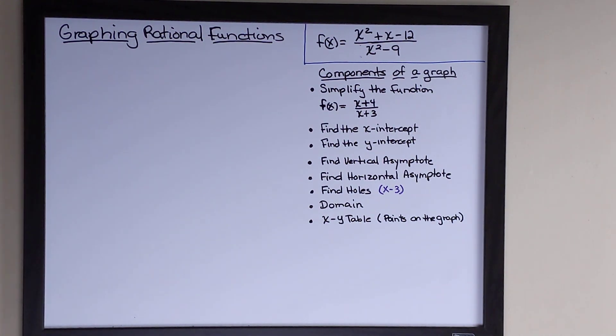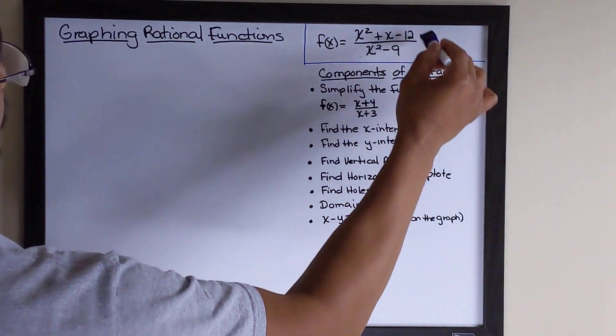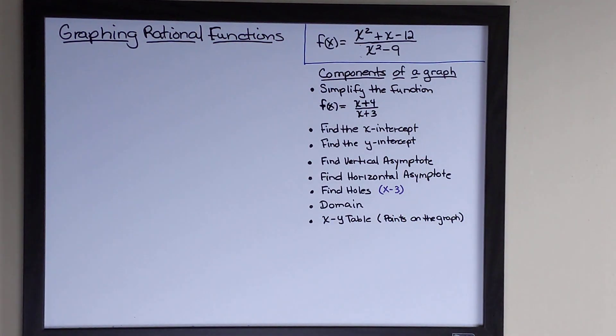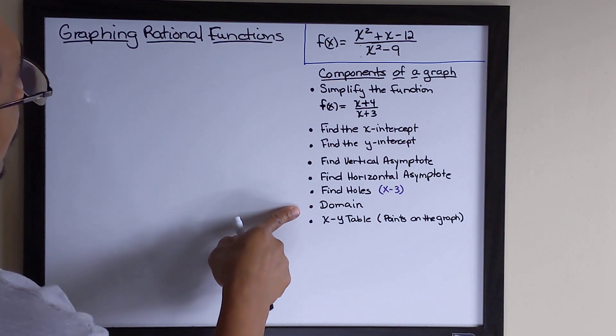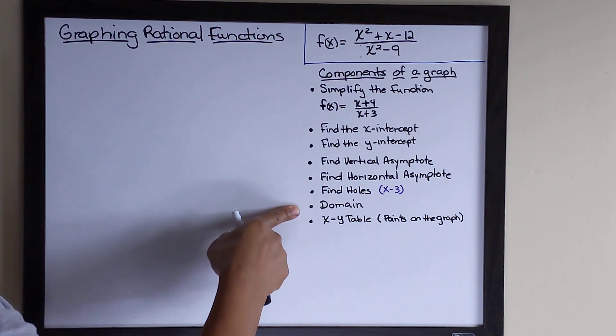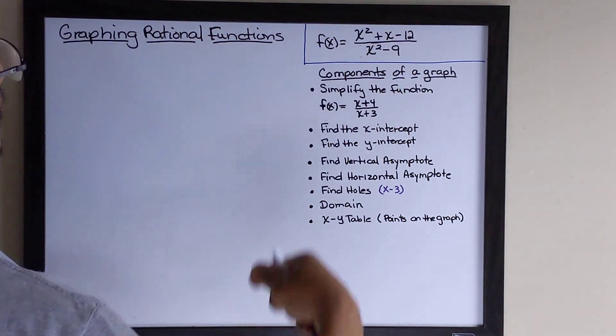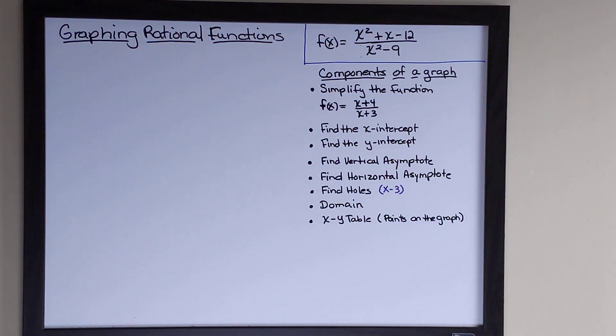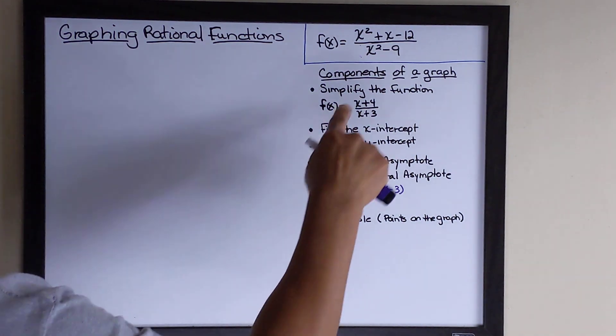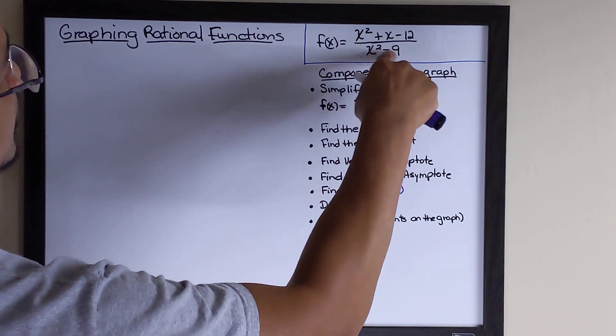Hello class, in this video we're talking about graphing rational functions, specifically this function right here. We're going to be looking for the domain, or basically the x values that we can legally use in this function. Now there are certain numbers that we can't use because if we plug these numbers in the denominator, it would make the denominator zero.